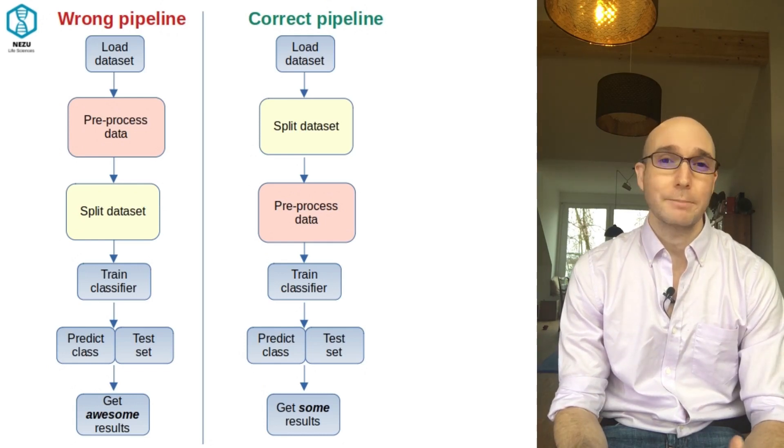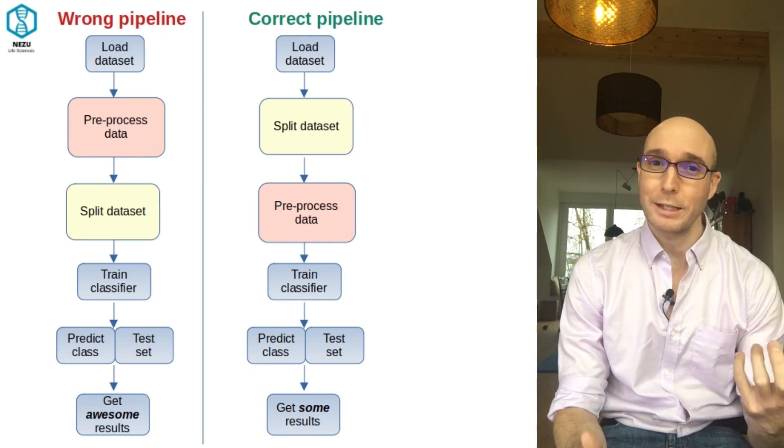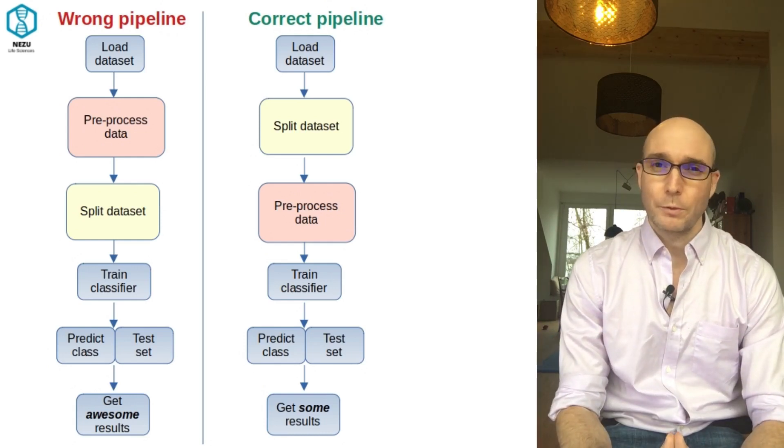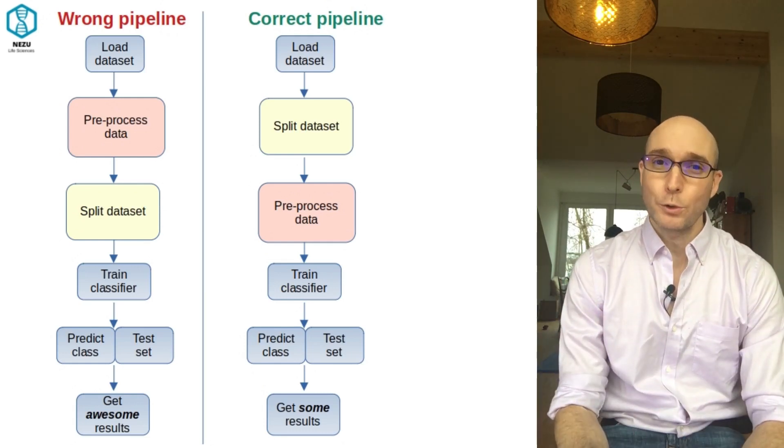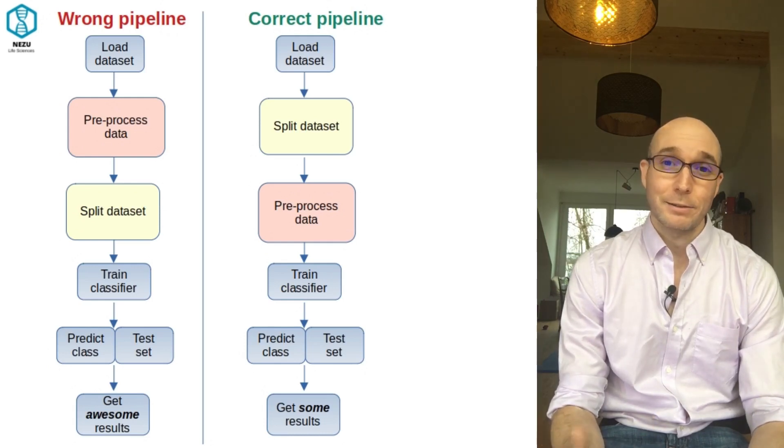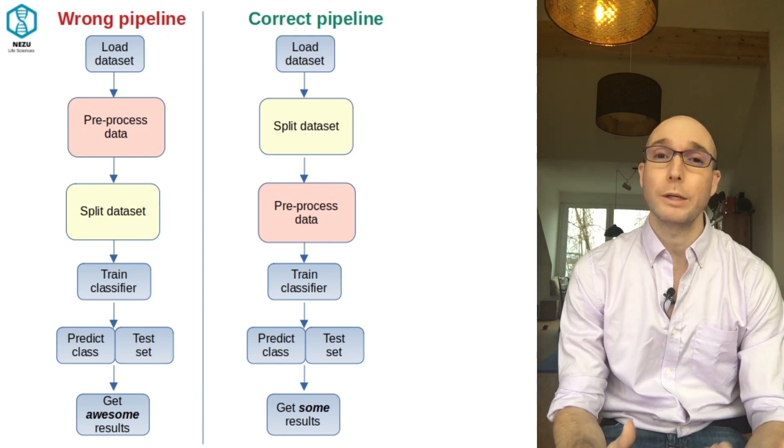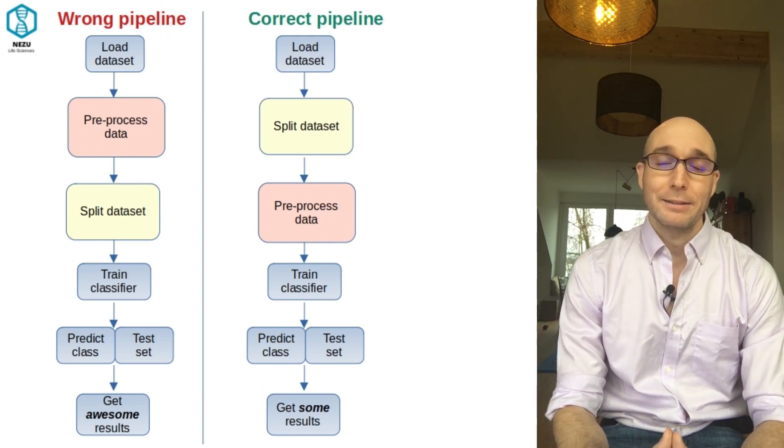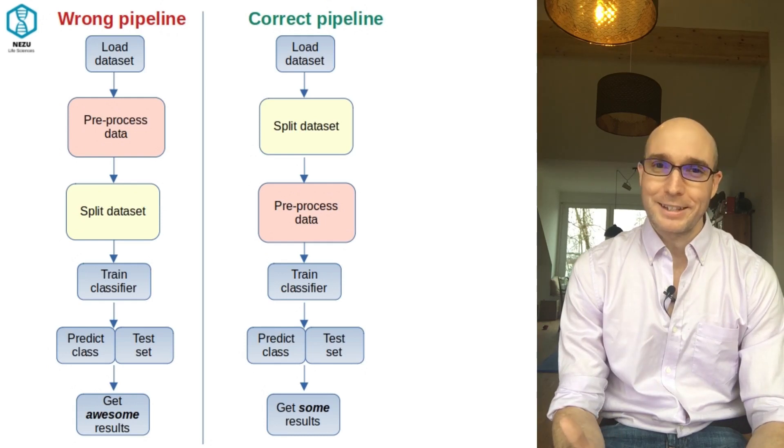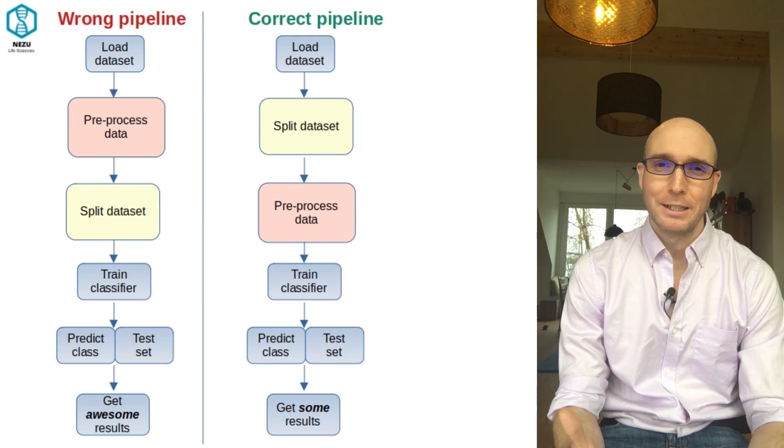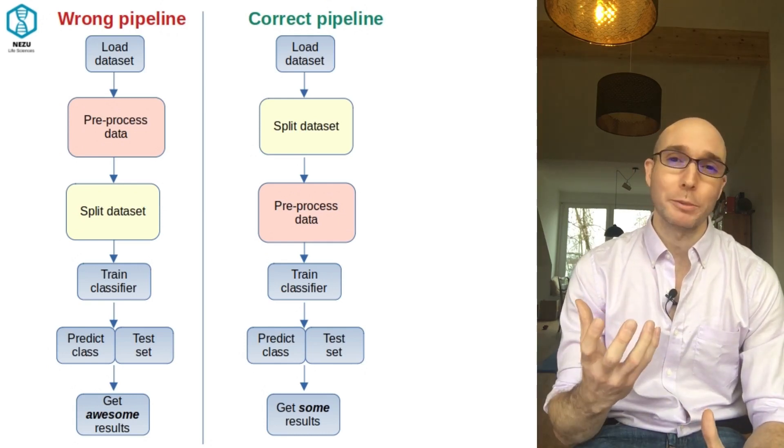Data pre-processing, like scaling or normalization or some feature selection, is applied to the entire data set before it's split into training and test sets. For example, think about what happens when you normalize your data using mean and standard deviation of the entire data set. If you do this before splitting the data, the test set - supposedly some unseen data - will influence the normalization process. The consequence is that the model gets access to some information about the test set during training, and this will artificially pump the performance of your classifier. So remember this: split first, pre-process later.